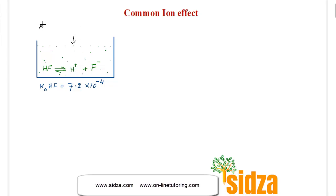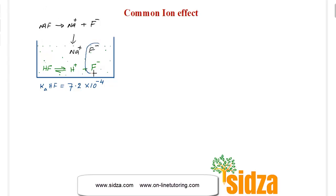If I add sodium fluoride (NaF) — sodium fluoride is a strong electrolyte — it dissociates into Na⁺ and F⁻ ions. When you add sodium fluoride to this solution, you now have sodium ions, fluoride ions, and hydrogen ions. So by adding sodium fluoride, we now have a common ion — the fluoride ion — which is common to both NaF and HF.